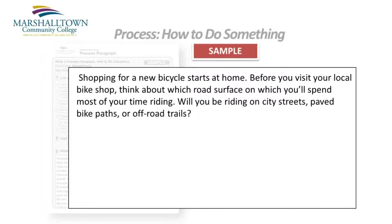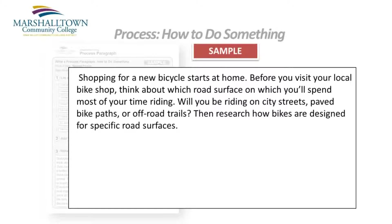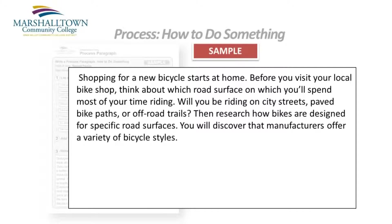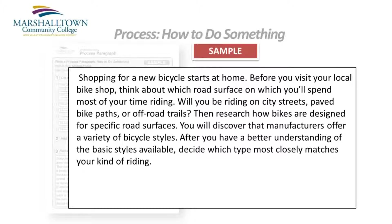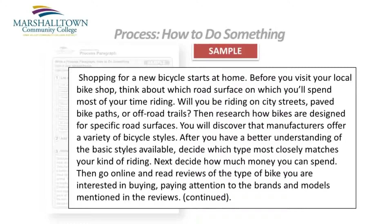Will you be riding on city streets, paved bike paths, or off-road trails? Then research how bikes are designed for specific road surfaces. Notice the transition word then. You will discover that manufacturers offer a variety of bicycle styles. After you have a better understanding of the basic styles available, decide which type most closely matches your kind of riding. Notice the transition word after. Next, decide how much money you can spend. Notice the transition word next. Then go online and read reviews of the type of bike you are interested in buying, paying attention to the brands and models mentioned in the reviews.